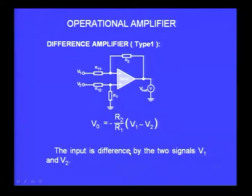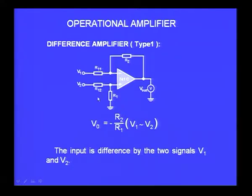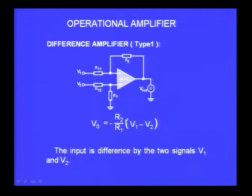The difference between the two signals V1 and V2 is amplified by a factor R2 by R1. So if R2 is 100k and R1 is 10k, I will get a gain of 10. There is a minus sign which shows there will be an inversion depending on which voltage is larger. If V2 is larger, V2 minus V1 becomes negative, and you get effectively a positive output. If V1 is larger than V2, you get a negative output.